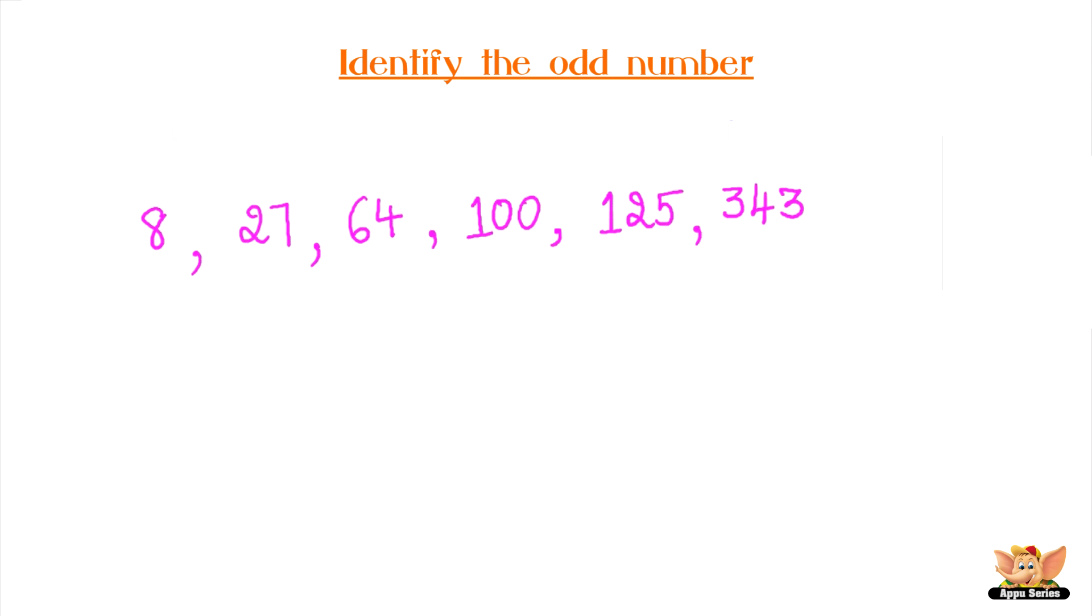If you notice, there is a pattern followed here. We have 2 cubed giving 8, 3 cubed giving 27, 4 cubed giving 64. But 100 is not a perfect cube. Let's continue and see if the other numbers are perfect cubes.